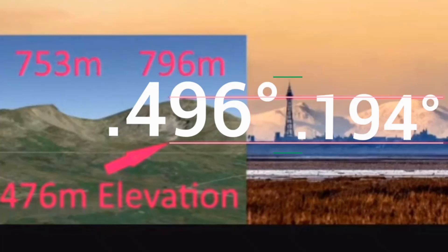His idea is 100% correct. If this photo was taken with a rectilinear lens, then that angular size of 0.194 degrees should be able to be applied to anything in the image, regardless of whether it's in the foreground or the background, whether you apply it vertically or horizontally. So that obviously includes Blackpool Tower. His idea is correct — the ratio of those green lines to the pink lines should match the ratio of the angular sizes of 0.496 compared to 0.194.